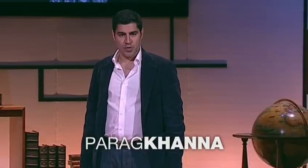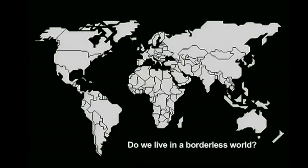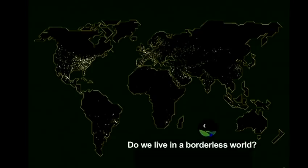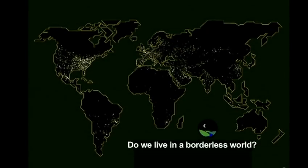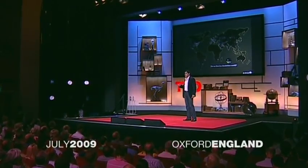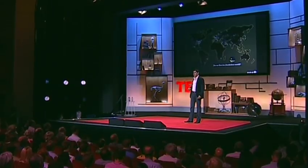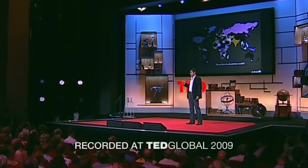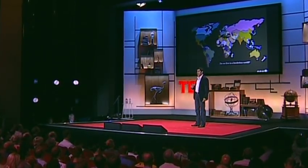Do we live in a borderless world? Before you answer that, have a look at this map. A contemporary political map shows that we have over 200 countries in the world today — probably more than at any time in centuries. Many of you might prefer a different map: Tedistan, where there are no borders, just connected spaces and unconnected spaces. Most of you reside in one of the 40 dots representing 90% of the world economy. But let's talk about the 90% of the world population that will never leave the place in which they were born. For them, nations, countries, boundaries, and borders still matter a great deal, and often violently.